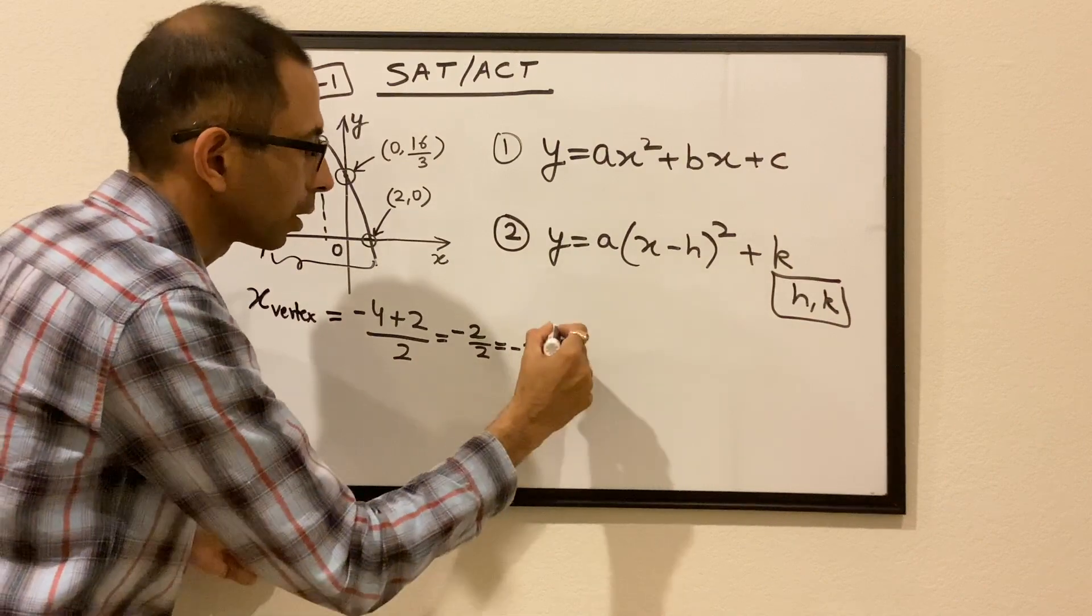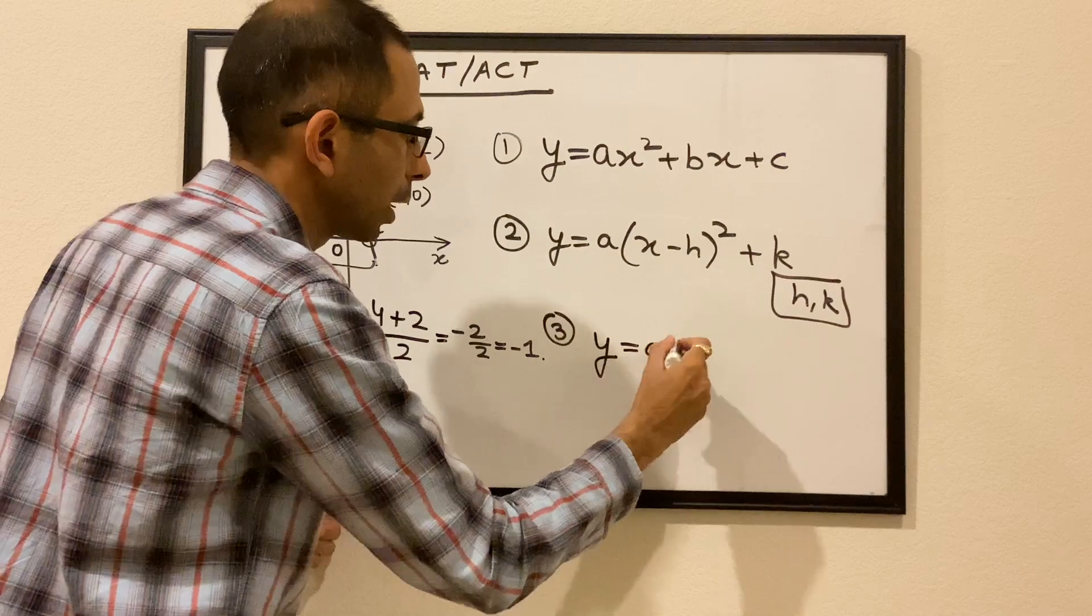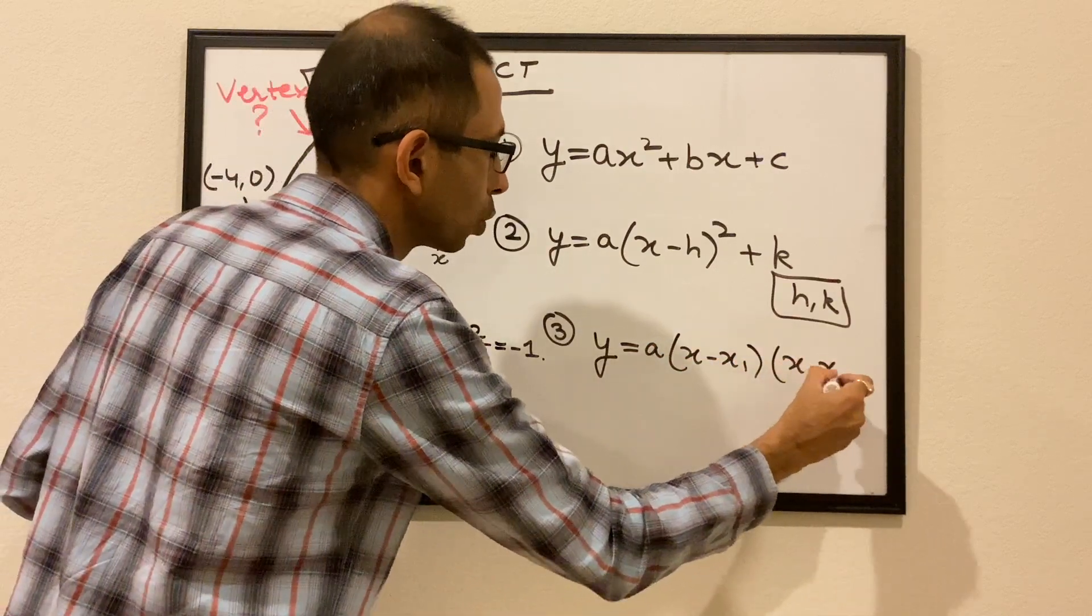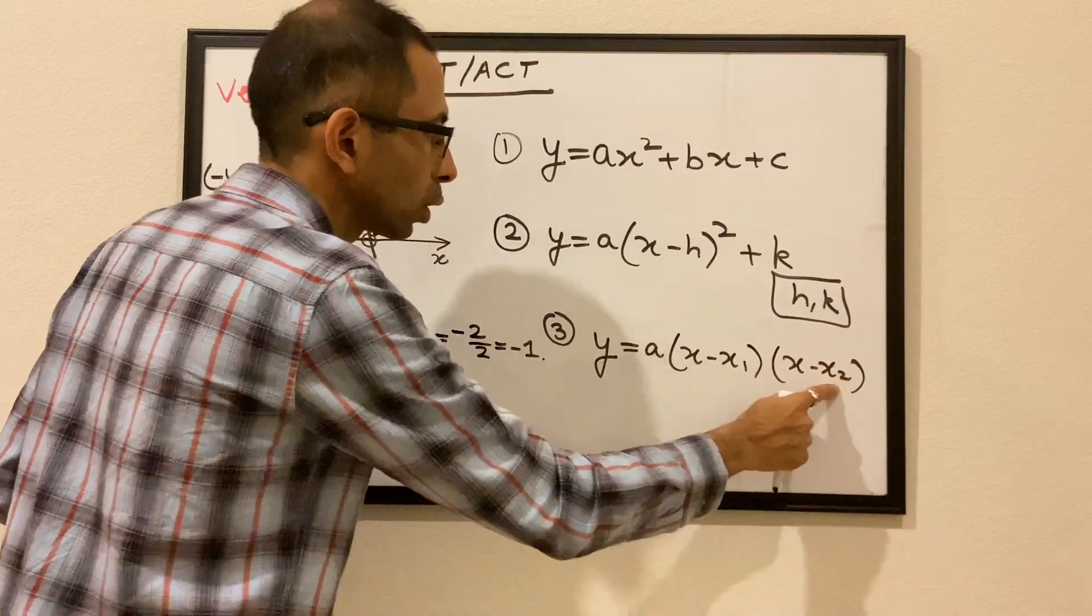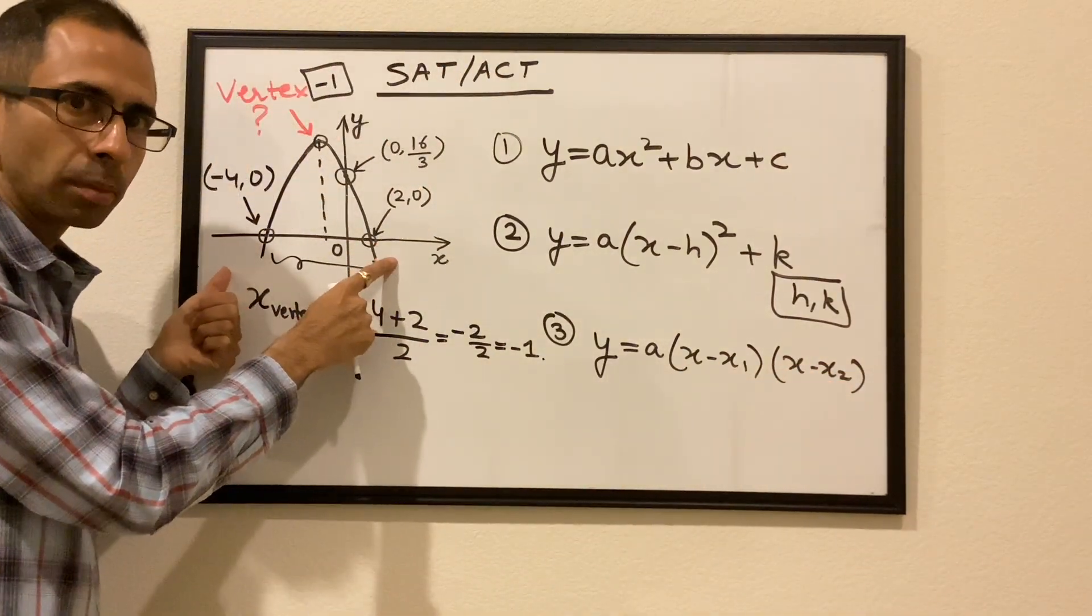And the third form is the roots form, wherein y equals a(x-x₁)(x-x₂). And x₁ and x₂ are the roots of the parabola or the x-intercepts of the parabola.